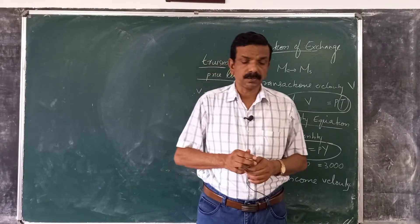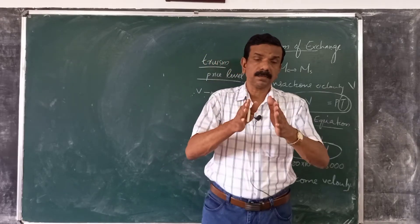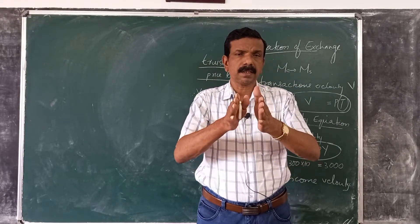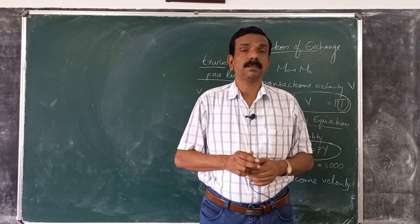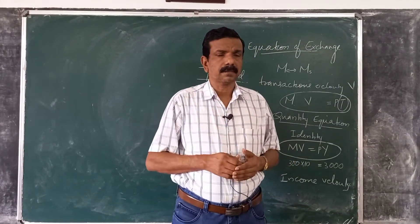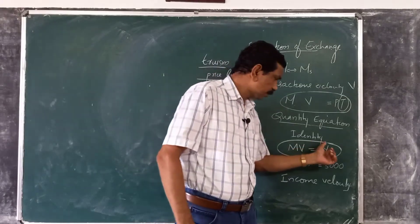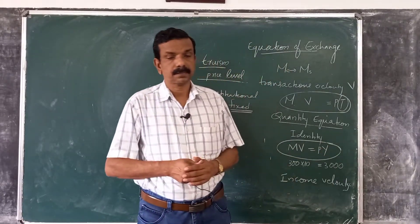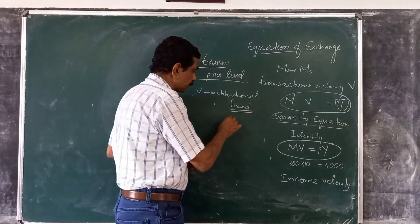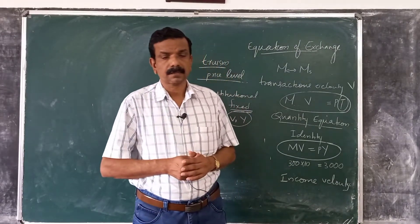Classical economics also assumed that wages are flexible, so equilibrium in the labour market is consistent with full employment. If there is full employment — ensured by flexibility of prices and wages — we can assume that Y is also constant, fixed at the full employment level. So if both V and Y are fixed, a change in money supply causes a change in the price level.